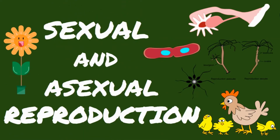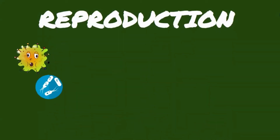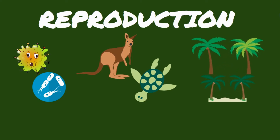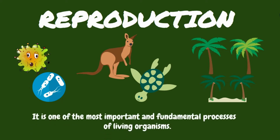While some bacteria live for a few minutes, some animals for half a century, and some plants and trees for hundreds or thousands of years, all organisms do not live forever. Without the process of reproduction, life would come to an end. It is one of the most important and fundamental processes of all living organisms.